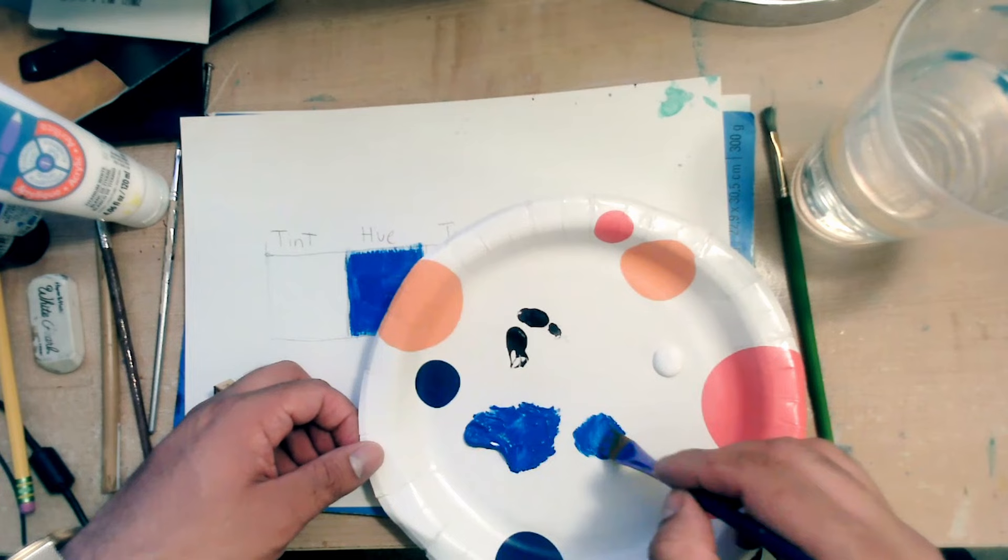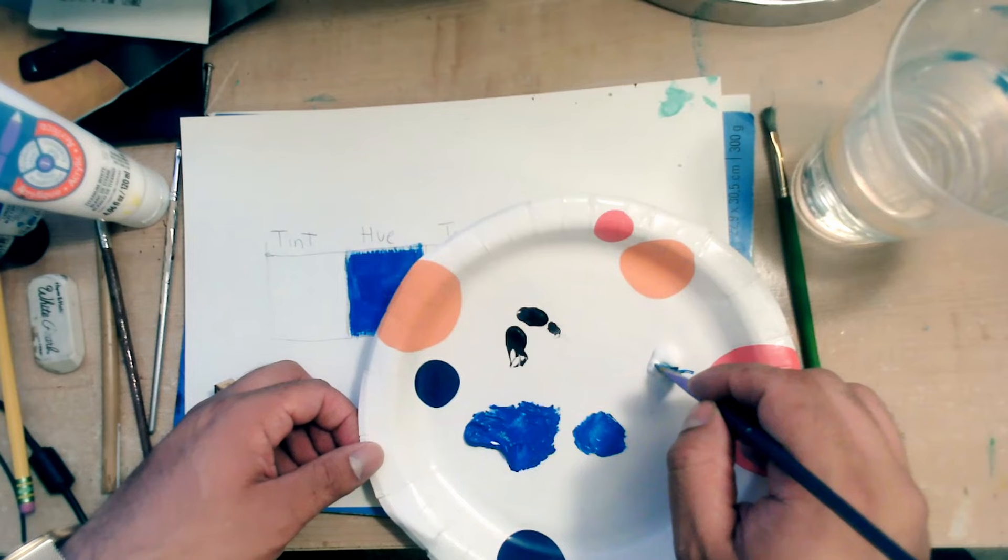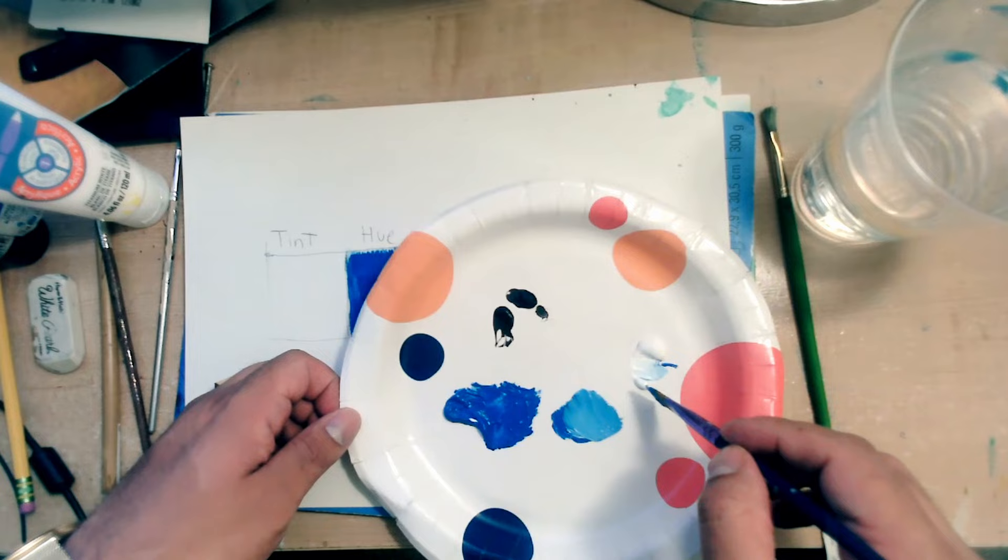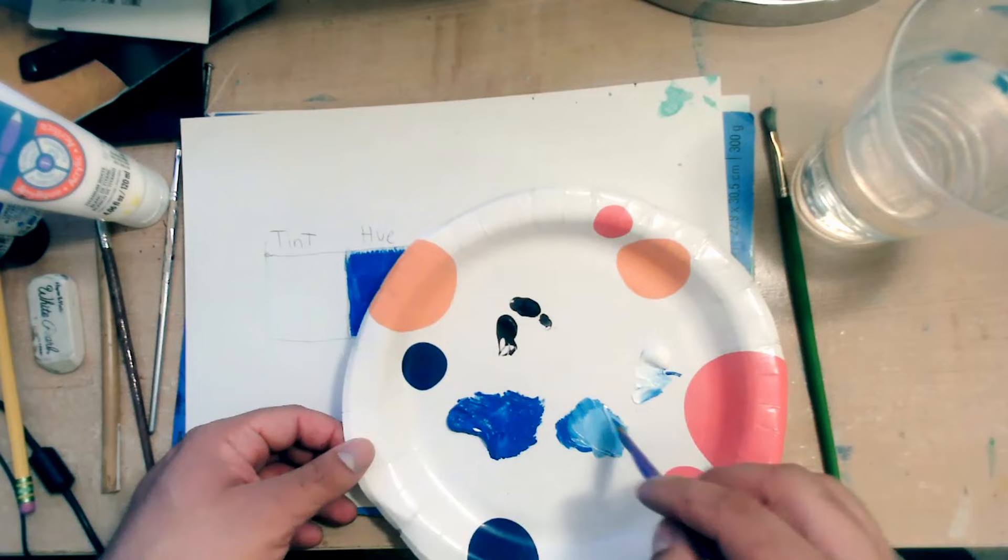Then you can get like half of this and start applying it. And look what happens. It starts to get lighter. If you want to make it even lighter, you would add more white. It's sort of a color science. You're balancing things.